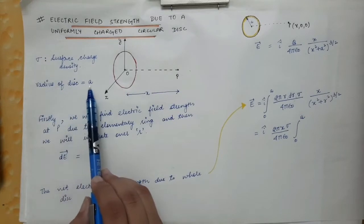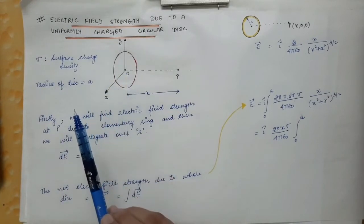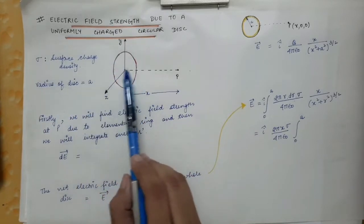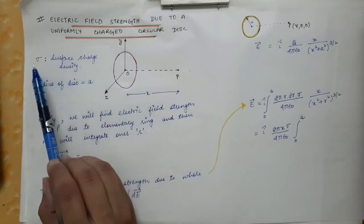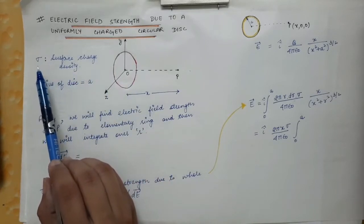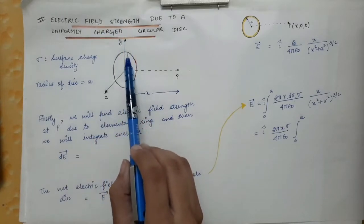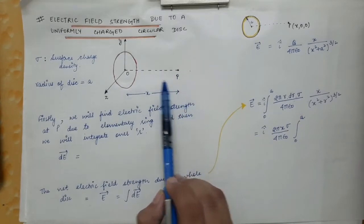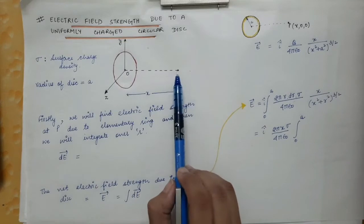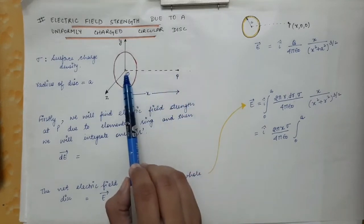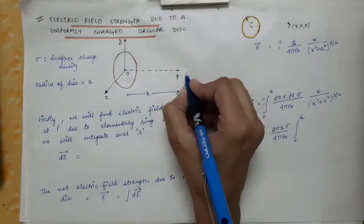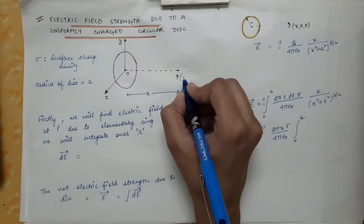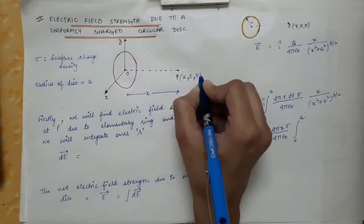The radius of the disk we are considering, let's say, is equal to small 'a'. So this disk of radius 'a' is uniformly charged with surface charge density sigma, and we want to find the electric field strength due to this charge distribution at a point P. P is the observation point, and the axis joining the observation point and the center of the disk is the x-axis. This point lies only on the x-axis, so the coordinates of this point are (x, 0, 0).